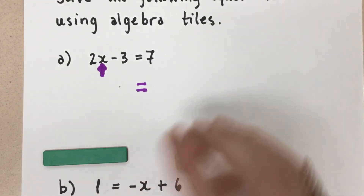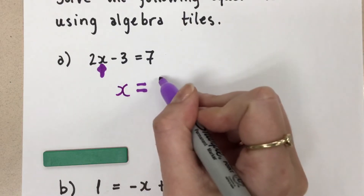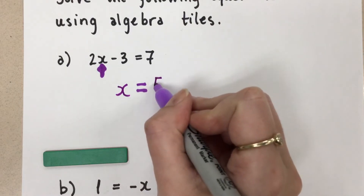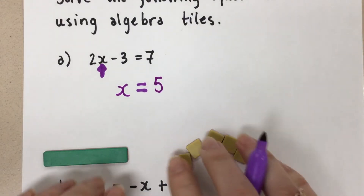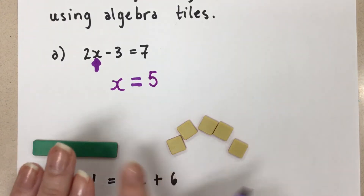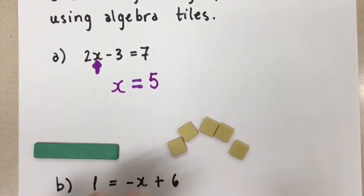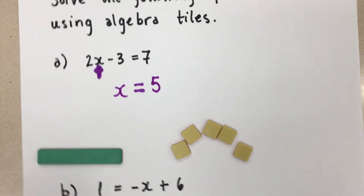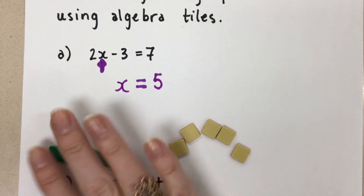Let's write that in. This is how we manipulate the algebra tiles to get the x alone on one side with its value on the other side of the equal sign — it's kind of like playing around with a puzzle.